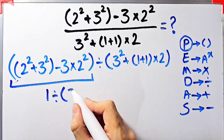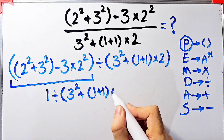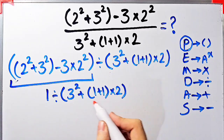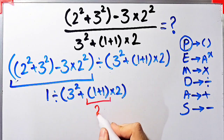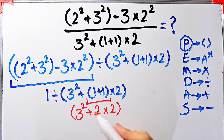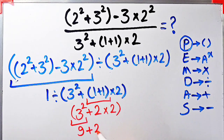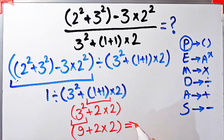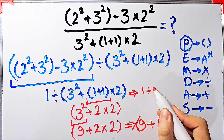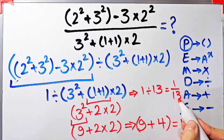Now the question is 1 divided by (3² + (1 + 1) × 2). We simplify the inner parentheses first: 1 + 1 equals 2. Now we have 3² + 2 × 2. We simplify the exponent: 3² equals 9. Now we have 9 + 2 × 2. We do the multiplication first: 2 × 2 equals 4. Then 9 + 4 equals 13. The final answer of the second parentheses equals 13.